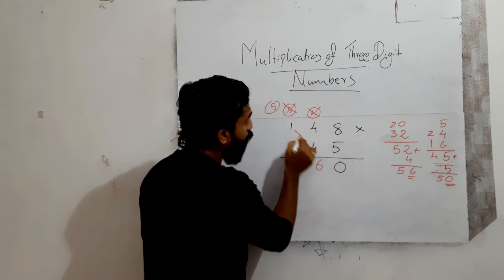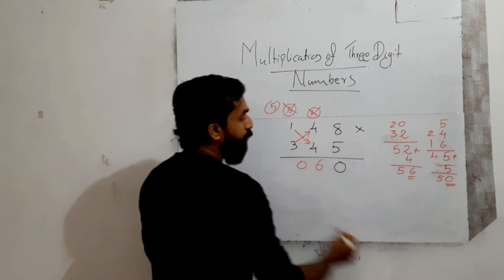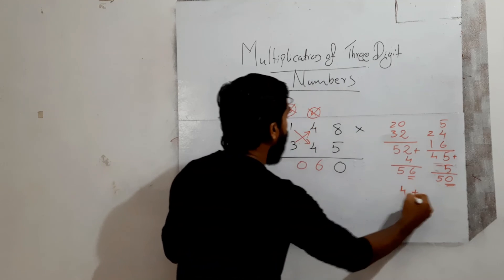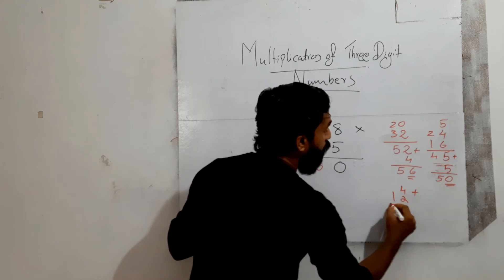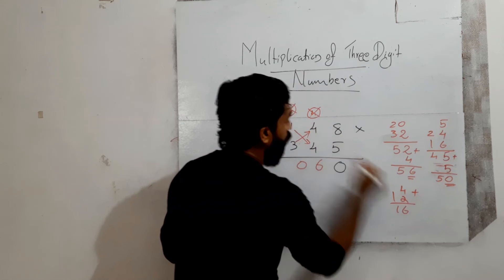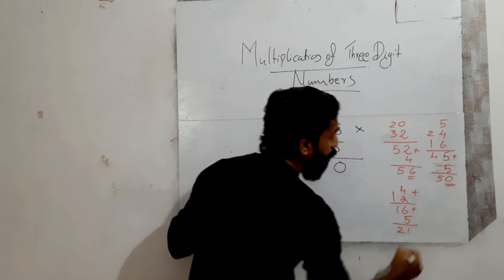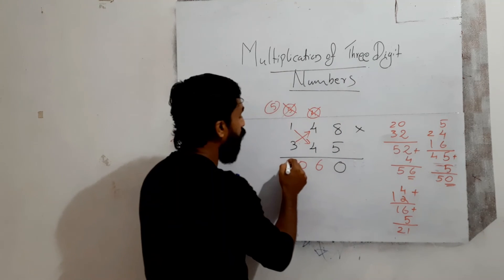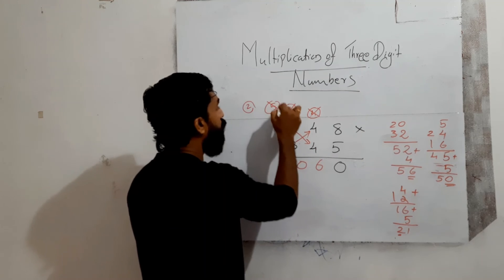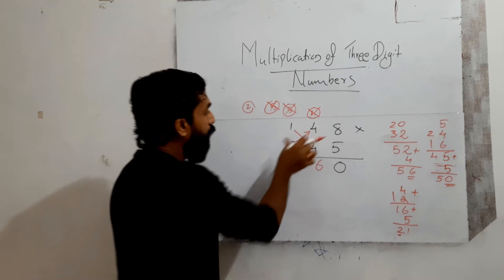Next: cross multiply the leading two-digit pairs. 1 into 4 is 4, plus 3 into 4 is 12. So 4 plus 12 equals 16. Add the carry of 5: 16 plus 5 equals 21. Write 1, carry over 2.